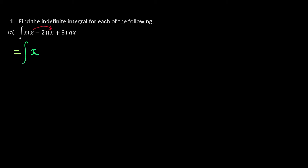x times x, we have x squared. x times 3, we have 3x. Negative 2 times x, we have negative 2x. Negative 2 times 3, we have negative 6.